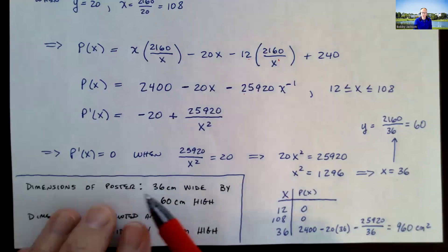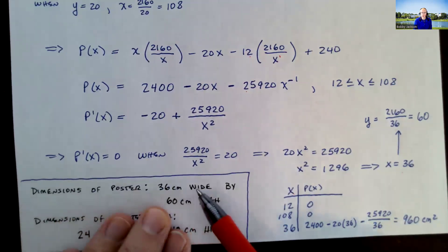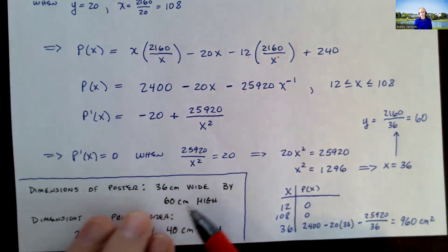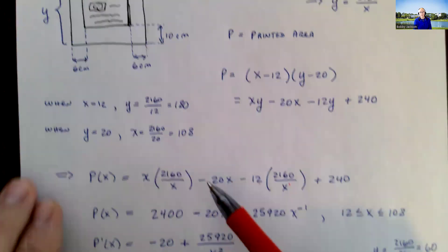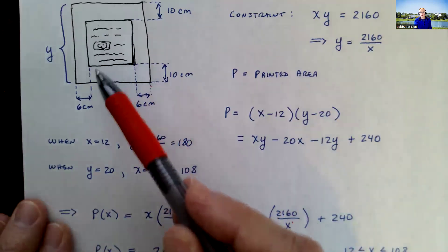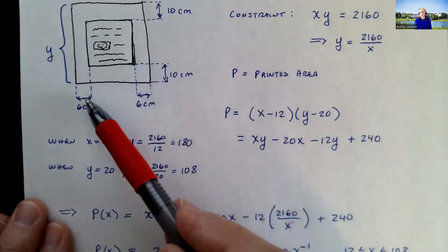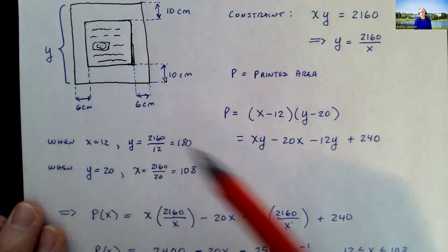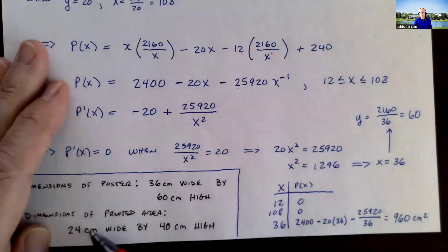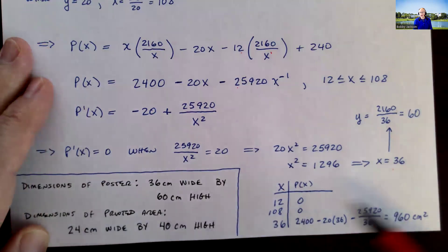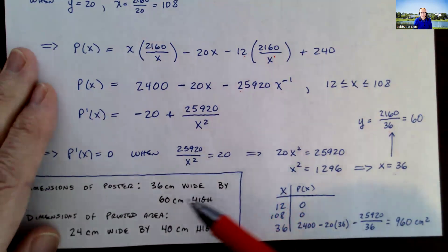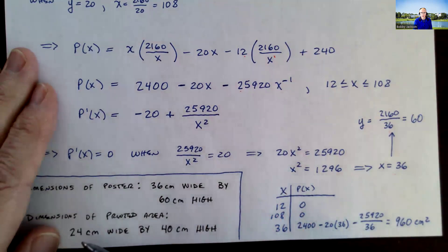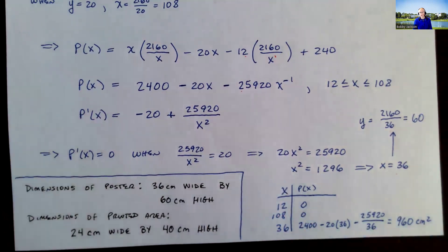So the dimensions of the poster, and this is what they want, 36 centimeters is the width. 60 centimeters is the height to maximize the printed area. What's the actual dimensions of the printed area? Well, if we go back, we know that x is 36, right? What's the width of our printed area? Well, it's 36 minus 12, right? Because we've got to take away 6 from each side. So 36 minus 12 gives me 24. That's the width of the printed area. And then remember, we have a margin of 10 inches on the top and bottom. So the 60 minus the 10 minus the 10 minus 20 is 40 centimeters. So our printed area, 24 centimeters wide, 40 centimeters high.